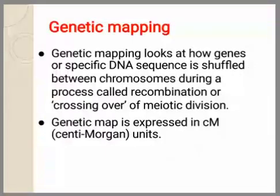One of the types of genome mapping is genetic mapping. A scientist Alfred created the first genetic map of a chromosome from fruit fly in 1913. He proposed that the frequency of crossing over between two genes could help determine their location on a chromosome.